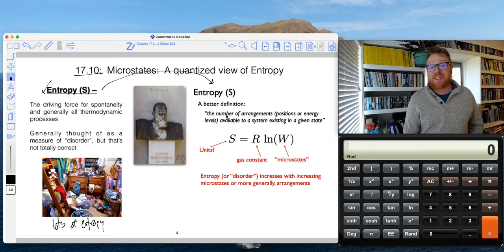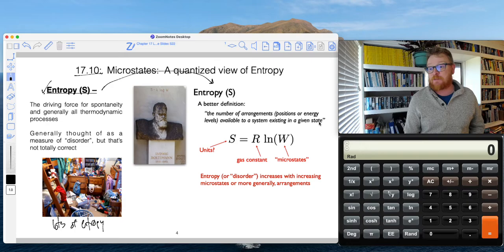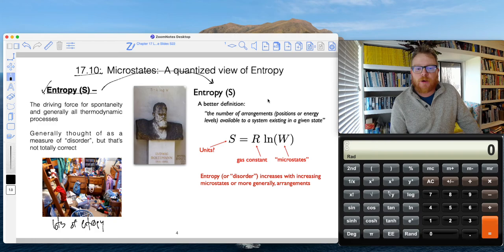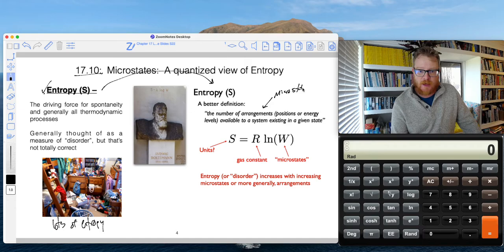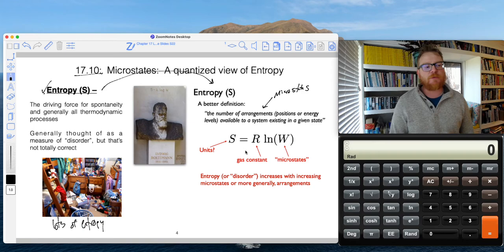But right away, and this is why I want to take us into this section 17.10, the actual correct definition of entropy is the number of arrangements available to a system existing in a given state. This number of arrangements, we're going to call those microstates, and we're going to flush that out in more detail here momentarily.